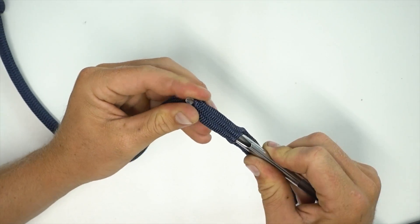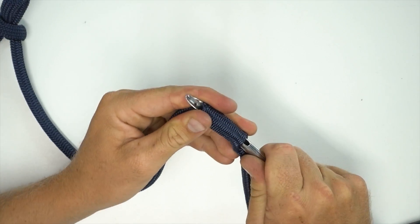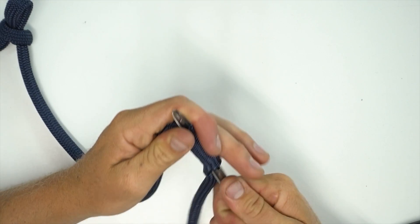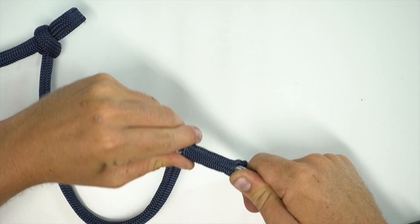We bunch up the cover just a little bit so there's a little bit of overlap between the cover and the core. This will ensure there's no empty space when our splice is finished.